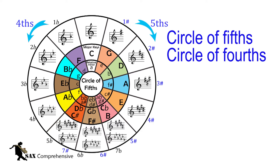The circle of fifths, or the circle of fourths as it can be known, is a visual way of showing the relationship between the major and minor keys and their scales. It can also be a useful tool for beginners to learn how many sharps or flats are in the scale, or for intermediates when improvising or changing the key of a phrase or piece of music.